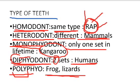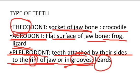Let's recap: homodont means a single type of teeth — examples are fishes, amphibians, and reptiles (RAP). Heterodont means different types of teeth such as incisors, canines, molars, and premolars — examples are mammals. Monophyodont means only one set in a lifetime — kangaroo. Diphyodont means two sets in a lifetime — humans. Polyphyodont means more than two sets — frog and lizard. Thecodont: embedded in socket — mammals and crocodiles. Acrodont: on flat surface — frog and lizard. Pleurodont: attached by sides to rim or groove — lizard.